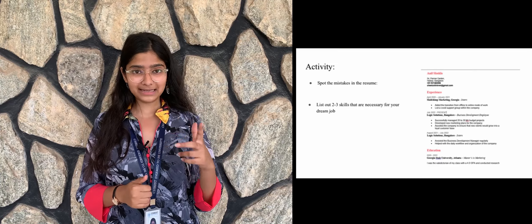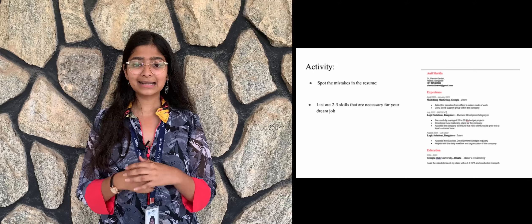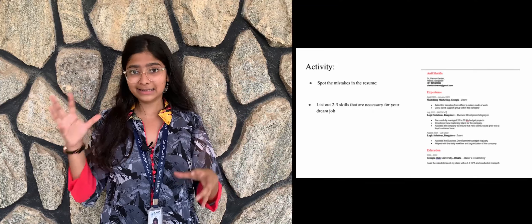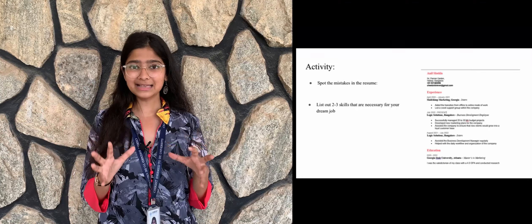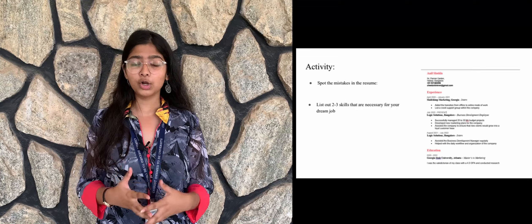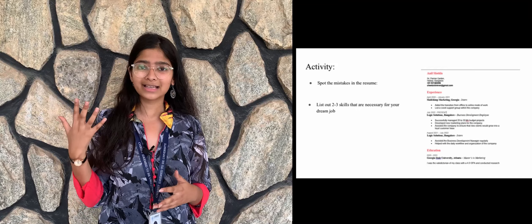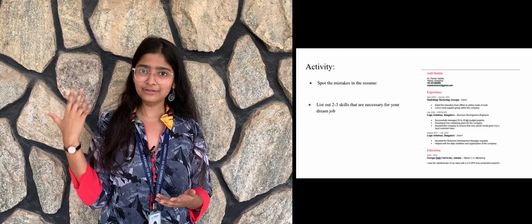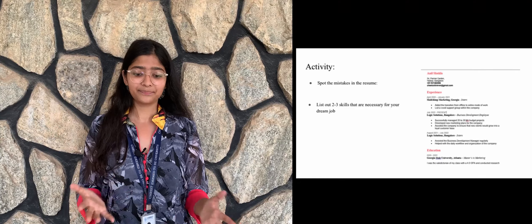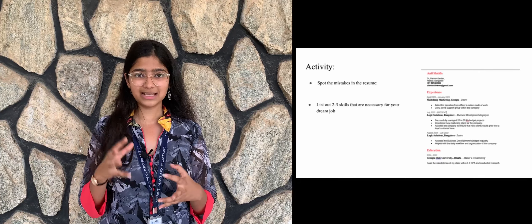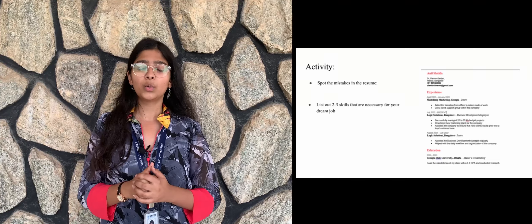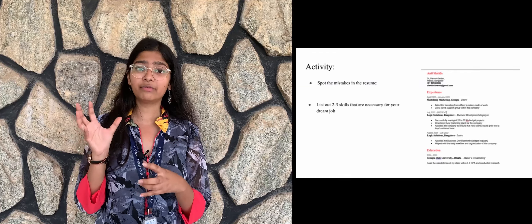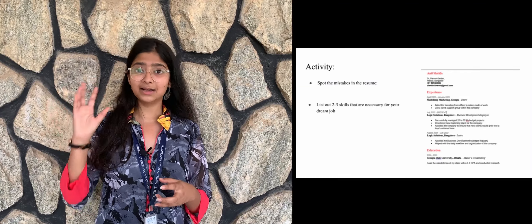In the experience section, you can see that it's scattered — 2020 achievements are written at the top and then 2022 follows. In a resume, you have to follow a descending order wherein your most recent work experience comes at the very top, followed by the others. And in the education section, we have written 'I was the...' — you do not use first-person pronouns while writing a resume.